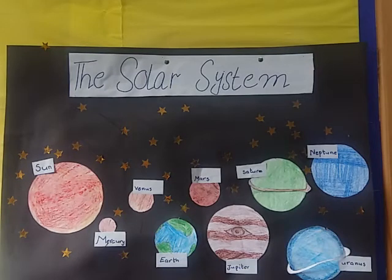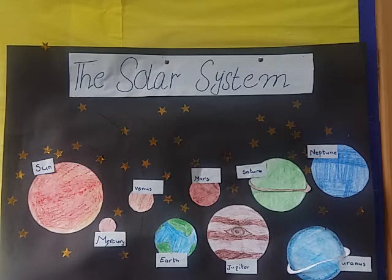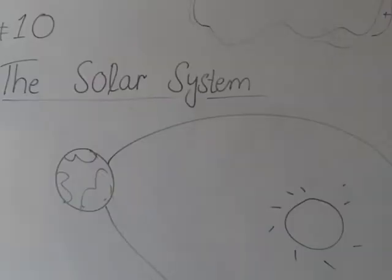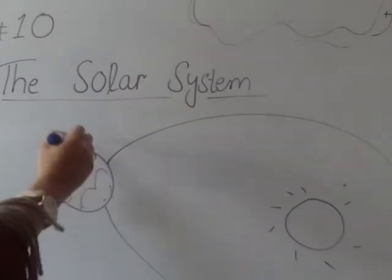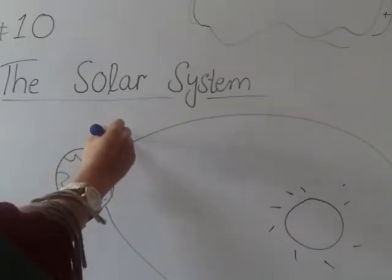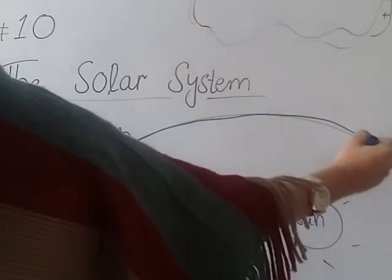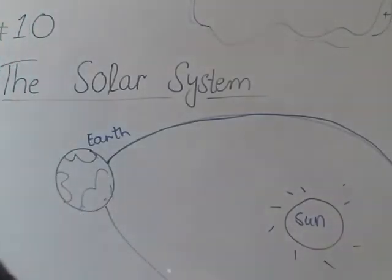Since we are living on the third planet, Earth, we will be focusing more on the Earth today — how days and nights come, what revolution is, what rotation is, and how we get different seasons. Coming back to the board, I have drawn the shape of the Earth. This is Earth, and this is the Sun. The path between them is what we call the orbit.